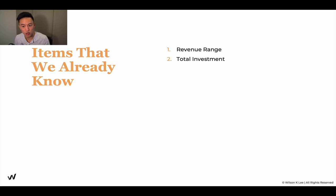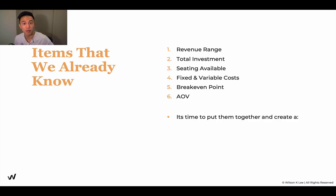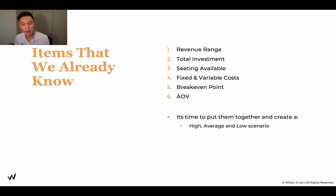We've got the revenue range, we've got the total investment, the seating available, fixed and variable costs, break-even point, and average order value. You've done the hard work, now it is time to put them together and create a high, average, and low scenario for your restaurant plan.